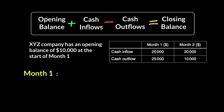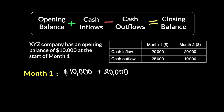Now remember, each period is first treated separately and then you move on to the next one — meaning you first complete the entire formula for month one. We have an opening balance of $10,000, cash inflows of $20,000, and outflows of $25,000. So that's $30,000 minus $25,000, giving a positive cash flow of $5,000 at the end of month one.